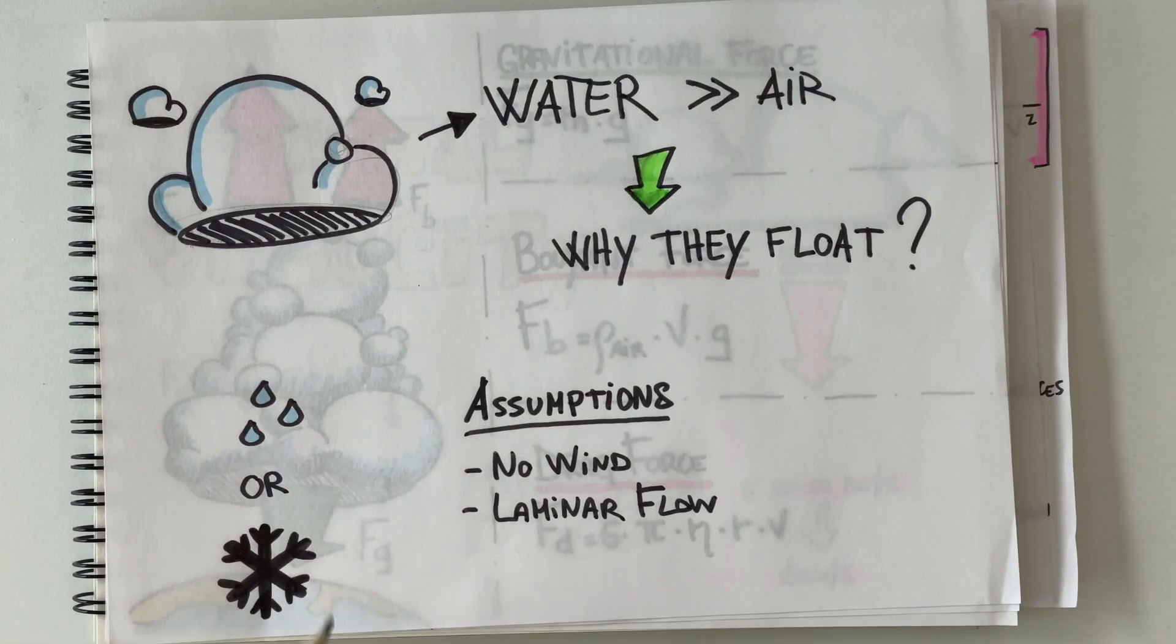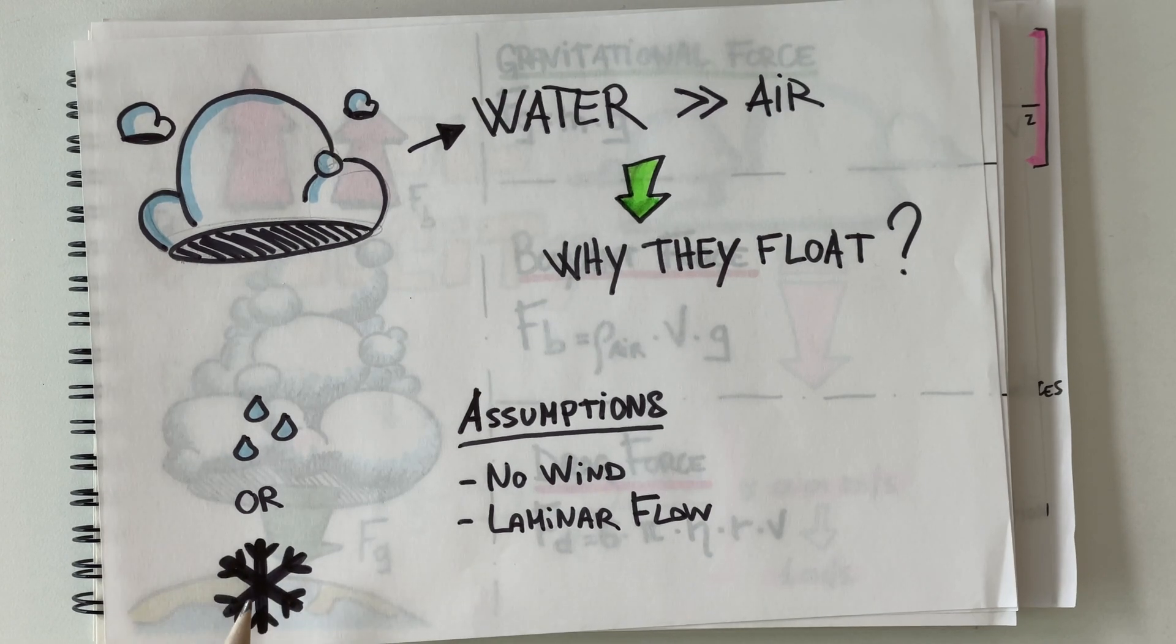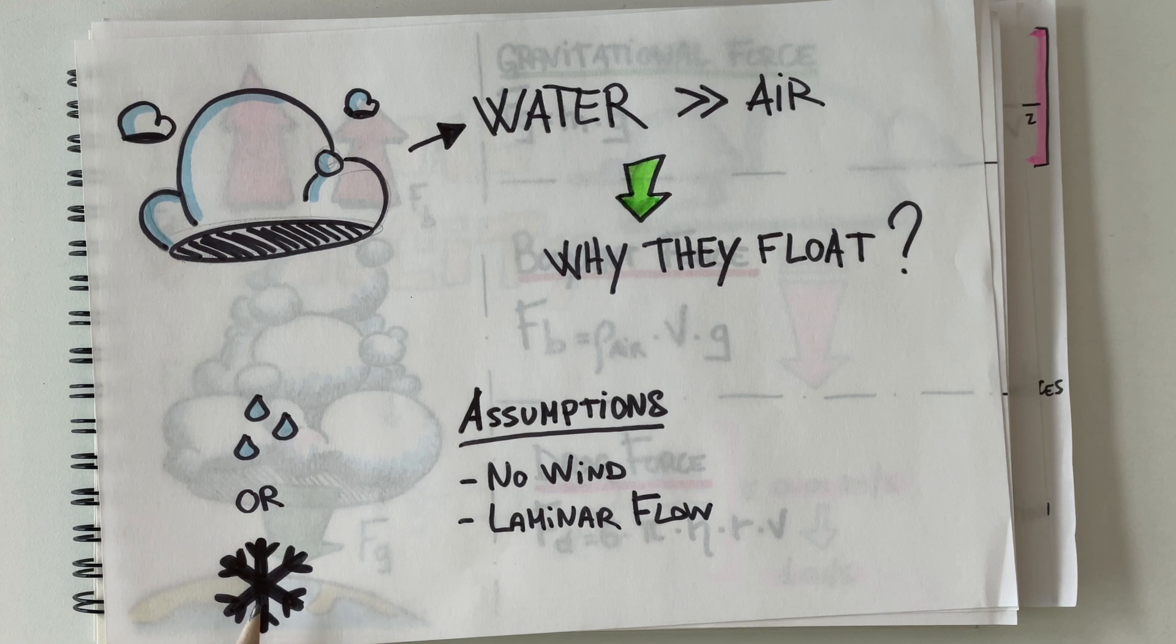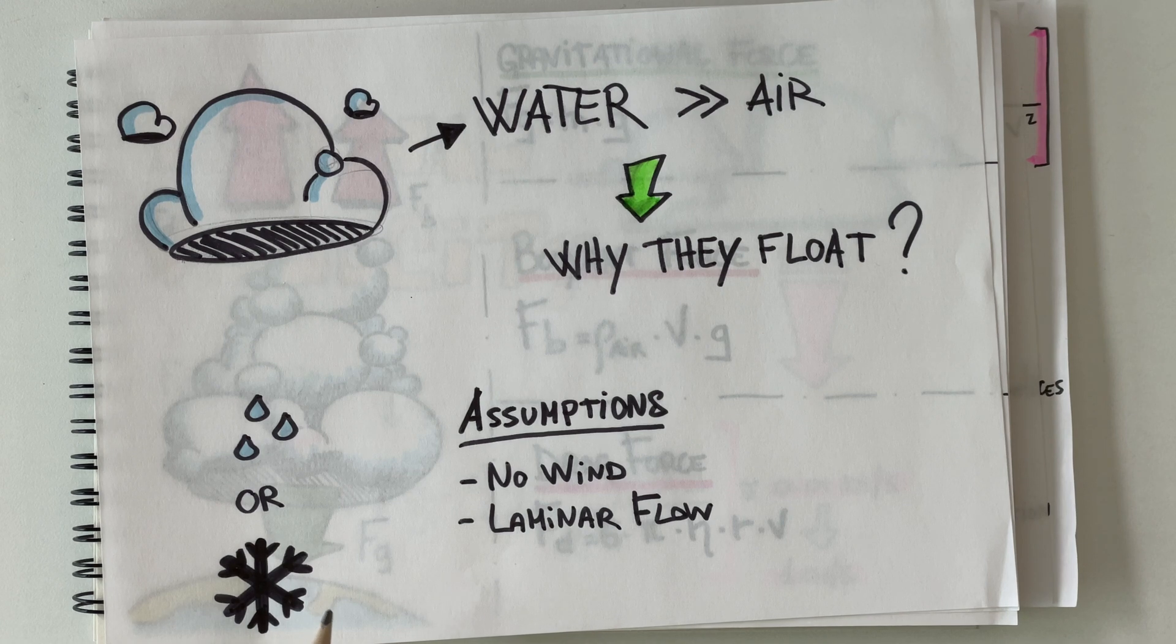So clouds can be made up of tiny droplets of liquid water or small crystals of solid water, but not water vapor. Water vapor is the gaseous form of water which is invisible, it has no color and it's completely transparent. But let's set aside vapor for now and focus on clouds as we see them.